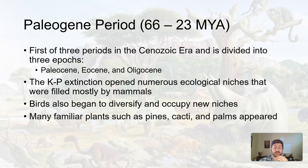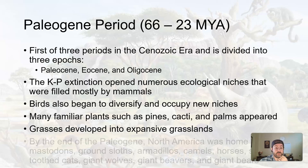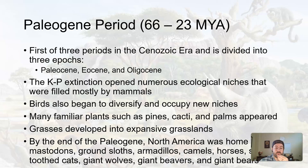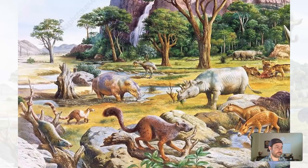Grasses developed into expansive grasslands for the first time. By the end of the Paleogene, North America was home to animals like mastodons, ground sloths, armadillos, camels, horses, saber-toothed cats, giant wolves, giant beavers, and giant bears — they were all giant. It might have looked a little something like this.